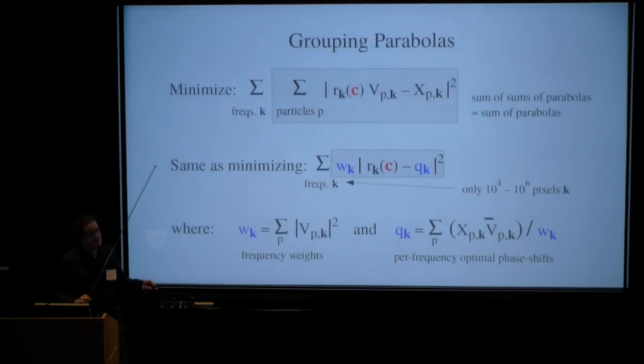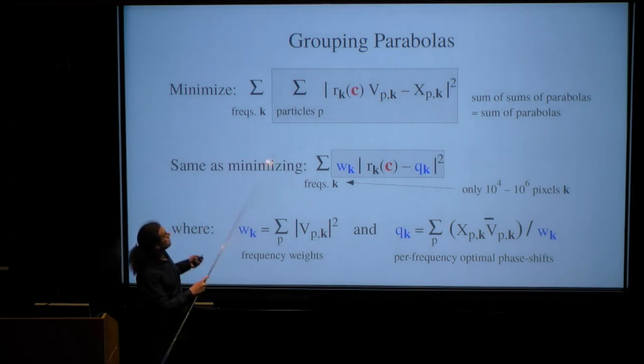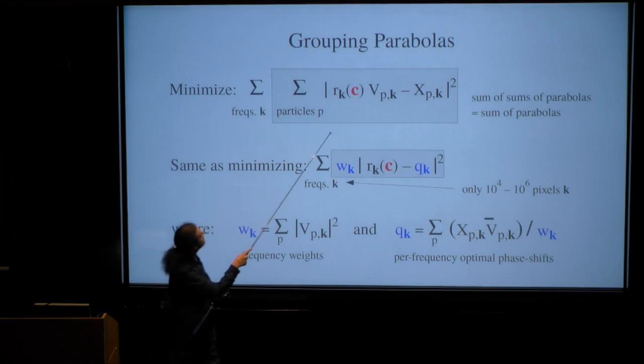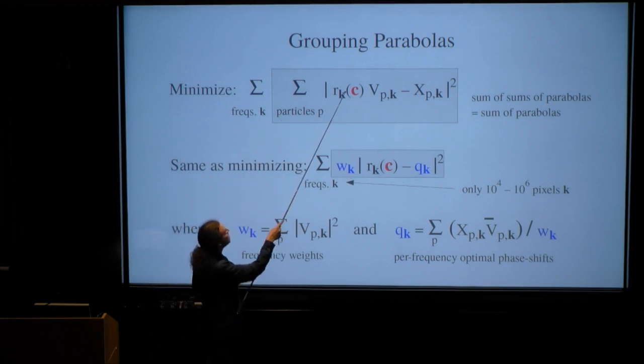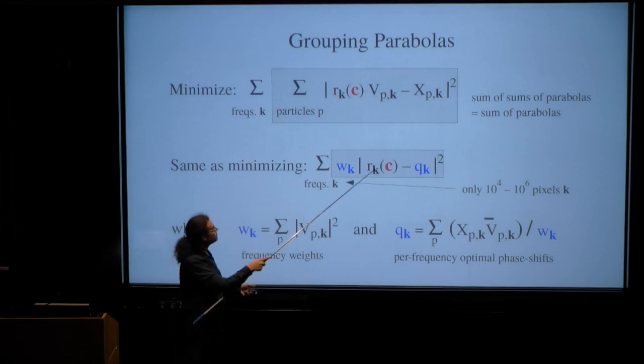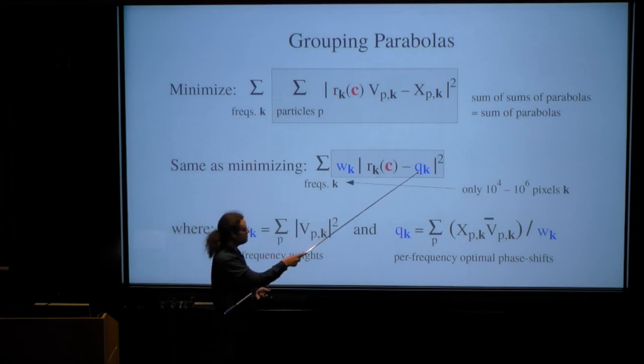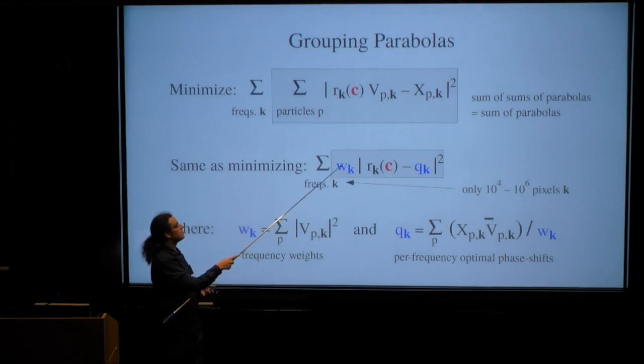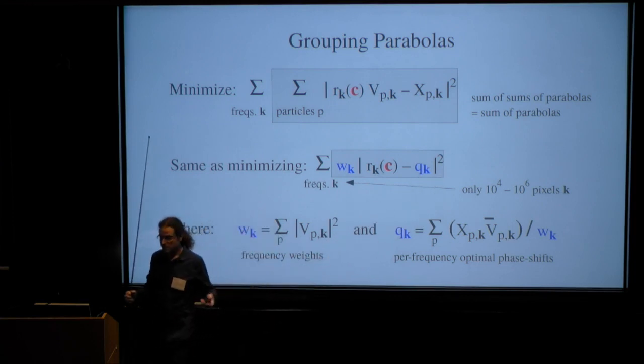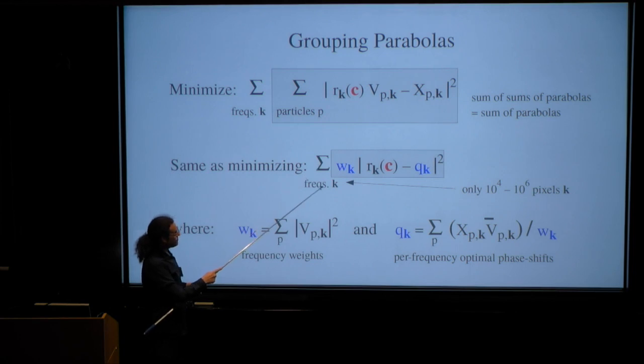Doing this nonlinearly iteratively would be prohibitive, especially because the particles are all stored on disk and have to be loaded over and over again. Instead, we can do something much more elegant. We can reorder the terms. And when we put all of the terms corresponding to one given frequency k together, we see that r is the same for all of them. And it's a sum of quadratic functions, which we can reduce to one single such quadratic function, which is defined by its vertex, its minimum q, and its weight or curvature w.